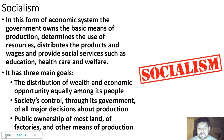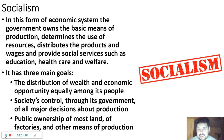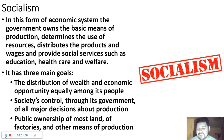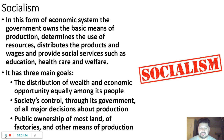Socialism is a form of an economic system in which the government owns the basic means of production, determines the use of the resources, and distributes the products and wages and social services such as education, health care, and welfare. There are three main goals when it comes to socialism.